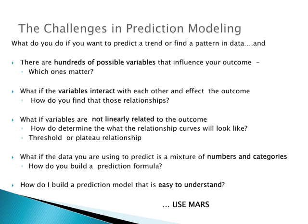Engineers always want linear relationships, but I'm not going to tackle the problem with preconceptions. I assume nothing is linearly related and let MARS find it. With chip characteristics, you'll have thresholds where something starts or a plateau effect — MARS handles that great. I can throw any kind of data at it, including categorical data, and it works. Years back I did a paper comparing neural nets, MARS, and principal components analysis for a project, and MARS came out better.